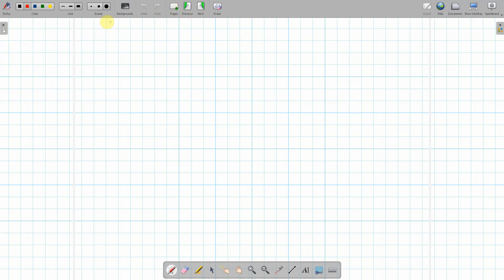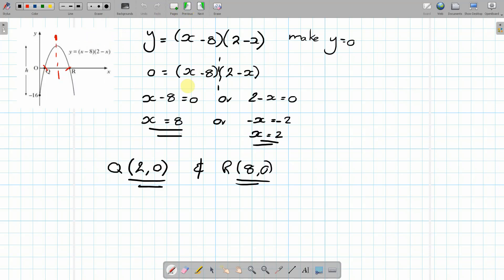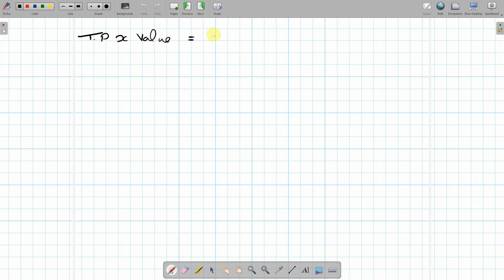So our roots were, so the turning point x value is going to be the two roots, so it's going to be 2 and 8. So it's going to be (2 plus 8) divided by 2, which will give you 5. Now that is the x value of the turning point. For the y value, just substitute it in to the equation.